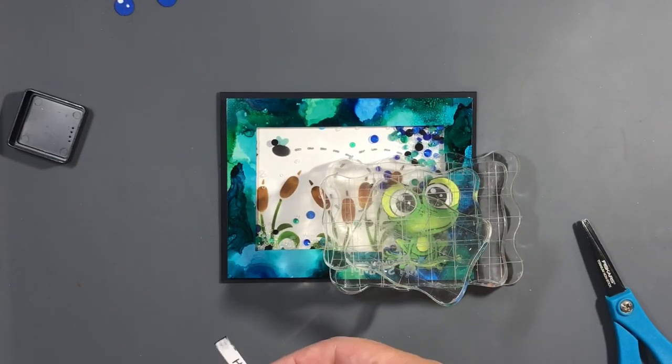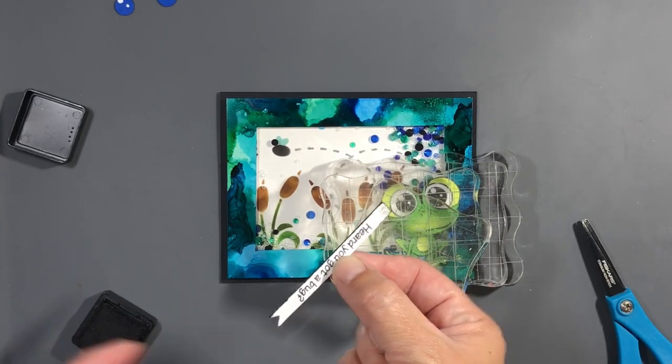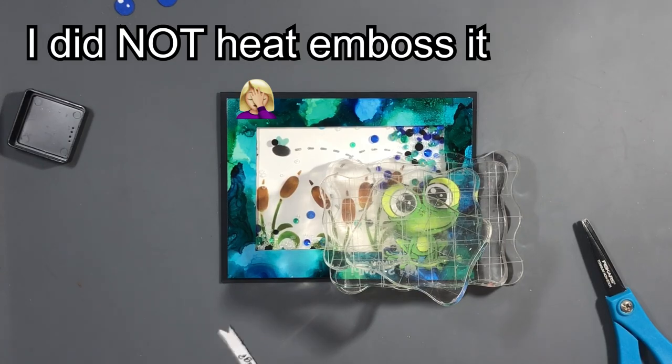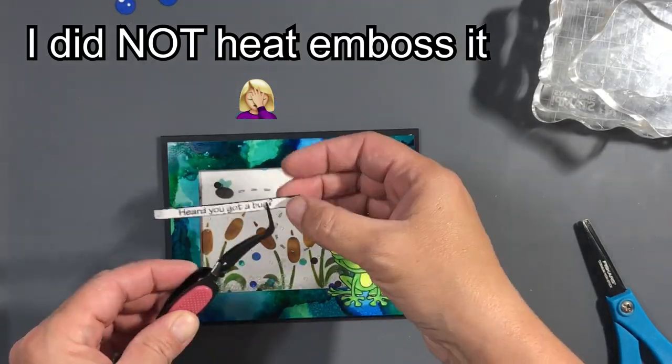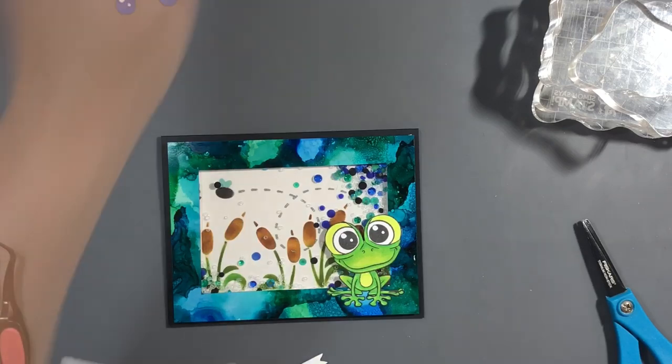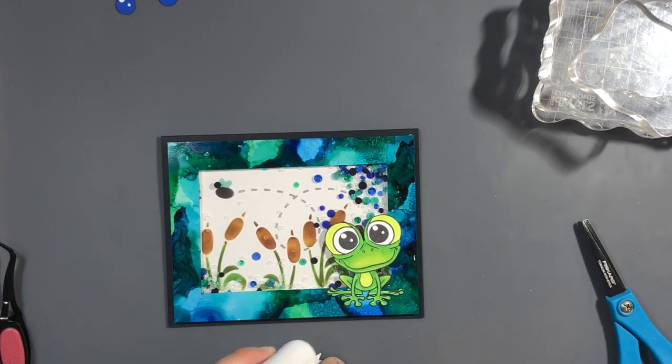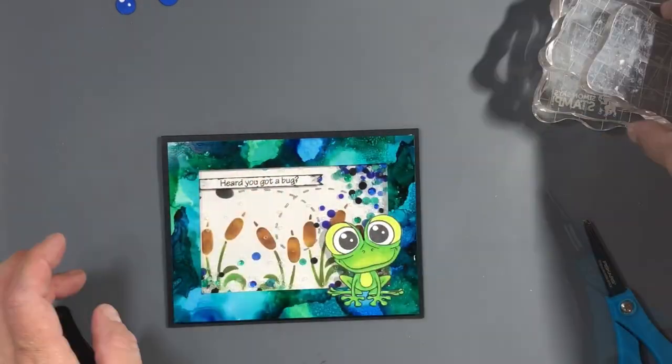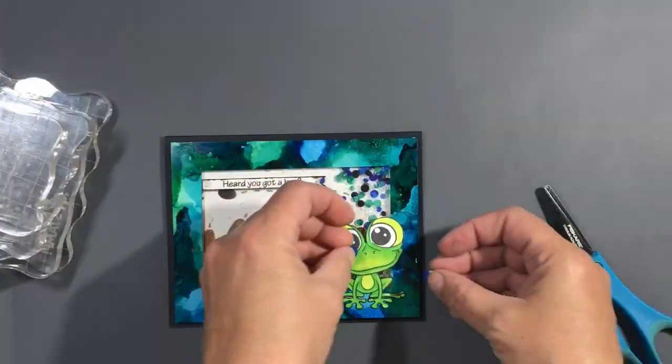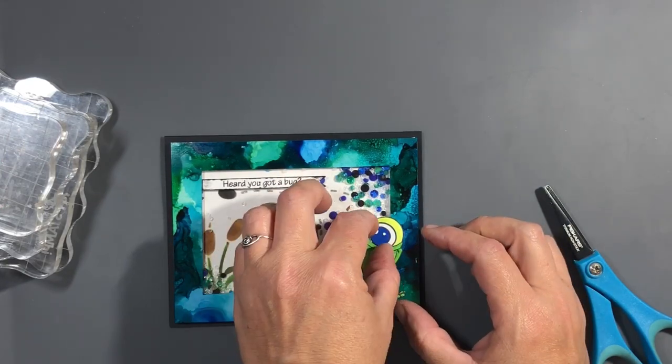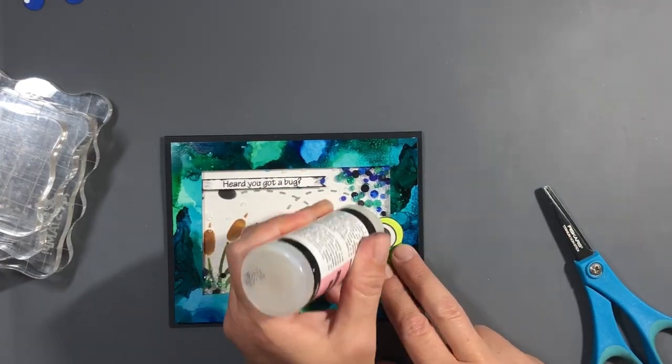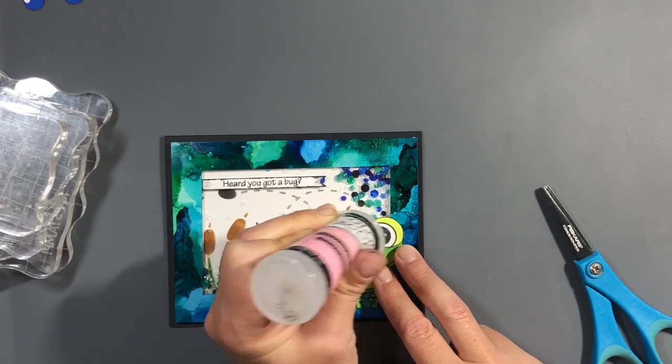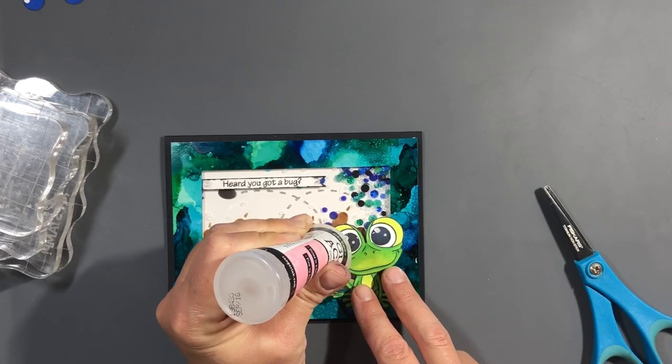After I stamped out the sentiment and heat embossed it, I went around the edges of the sentiment strip with Black Soot distress ink. I don't know if I like it or not. I was trying to pull in the black card base. I kind of like it. I'm still not too sure about it. And there I'm playing around with the colored eyes. Let me know also down below if you prefer the colored eyes or the black eyes with glossy accents.